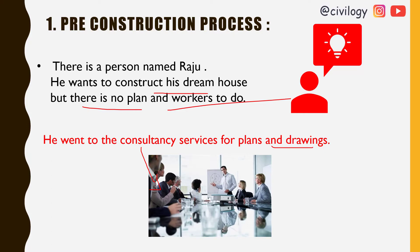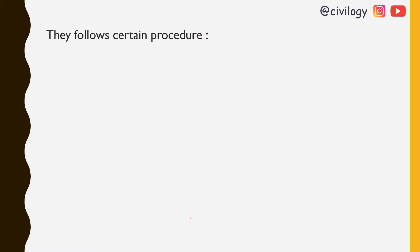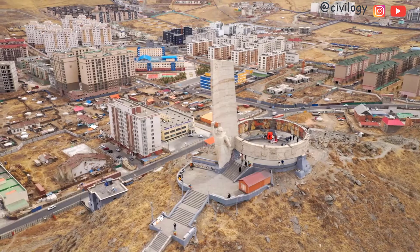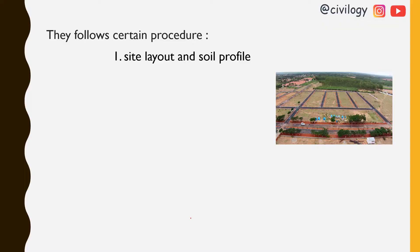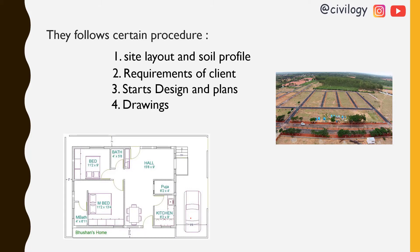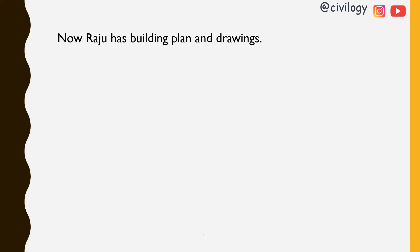The consultancy services can give plans and drawings to Rajo. They follow certain procedures — site layout and site profile — meaning they go to the site to check whether it is east-facing or north-facing, the dimensions, and soil profile. They check everything and start designing and planning based on the client's requirements, then provide drawings to Rajo. This is an example of a drawing given to a client.